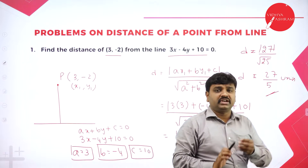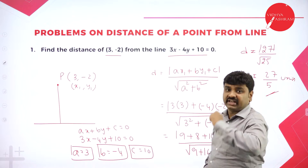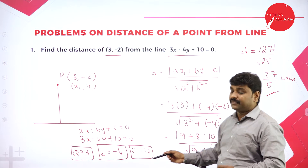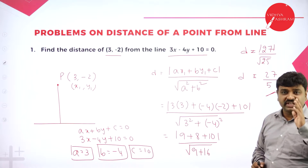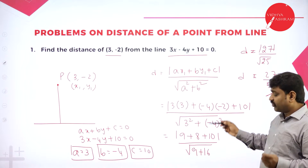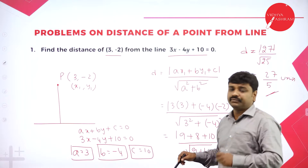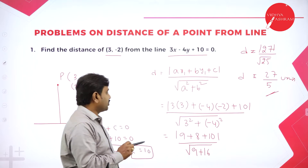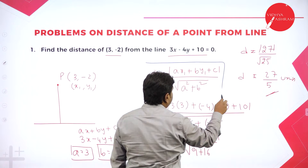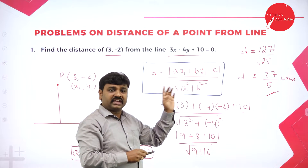I hope all of you understood how to find distance of a point from a line. Whatever point they give, call it X1, Y1. Whatever line they give, write it as AX plus BY plus C equal to 0 — coefficient of X is A, coefficient of Y is B, constant is C. Substitute in the formula: modulus of AX1 plus BY1 plus C, divided by root of A square plus B square.